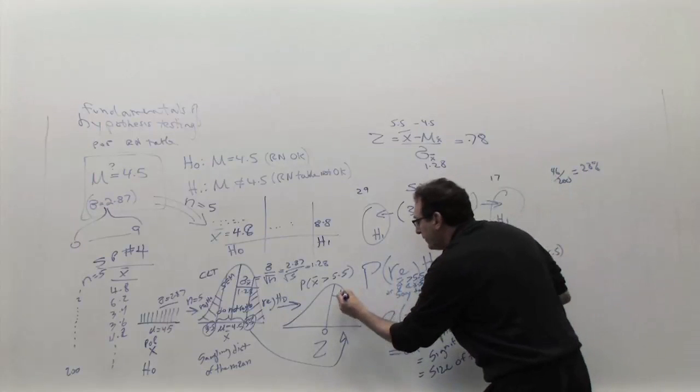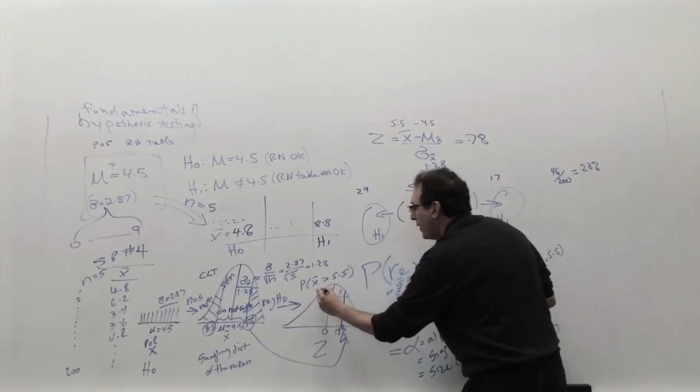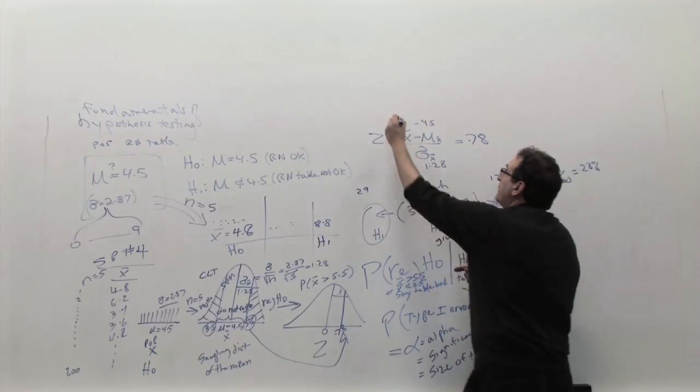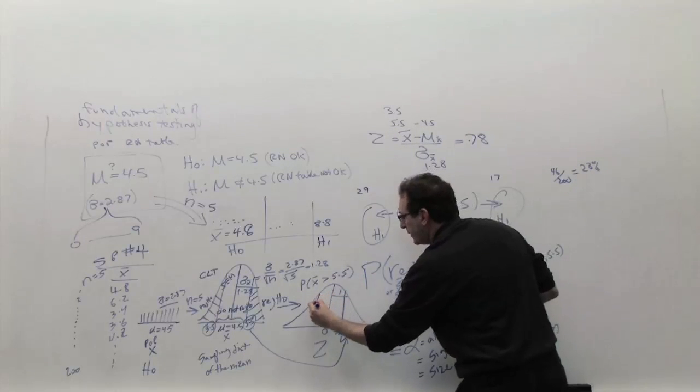And where is 0.78? Well, 0.78 is around here. Here's one. And if you plug in 3.5 into the exact same thing, but by symmetry, it should be minus 0.78. So minus 0.78 is over here.